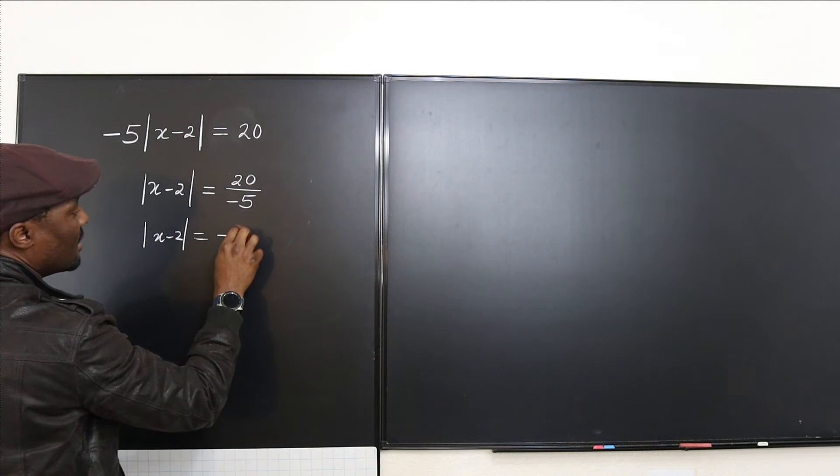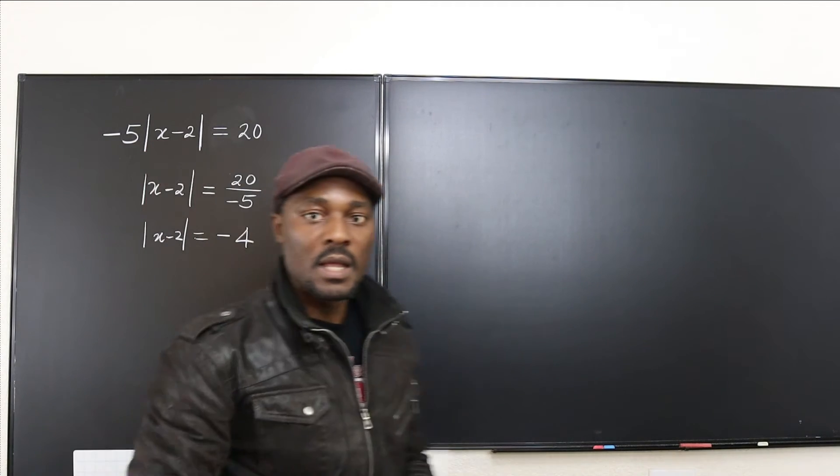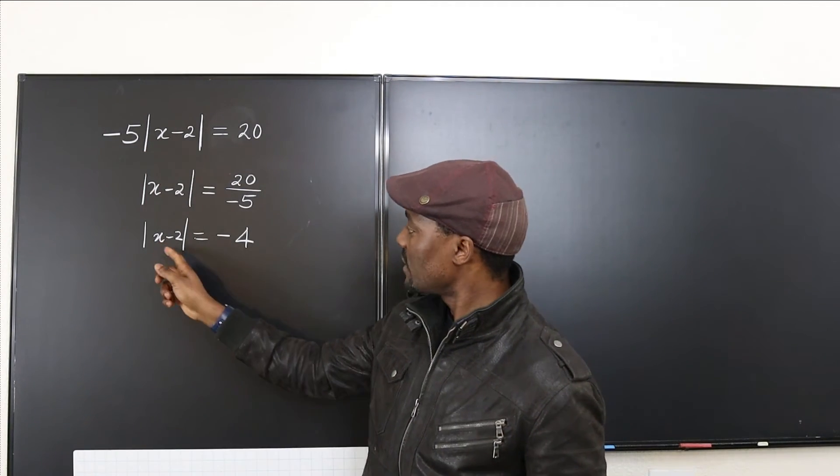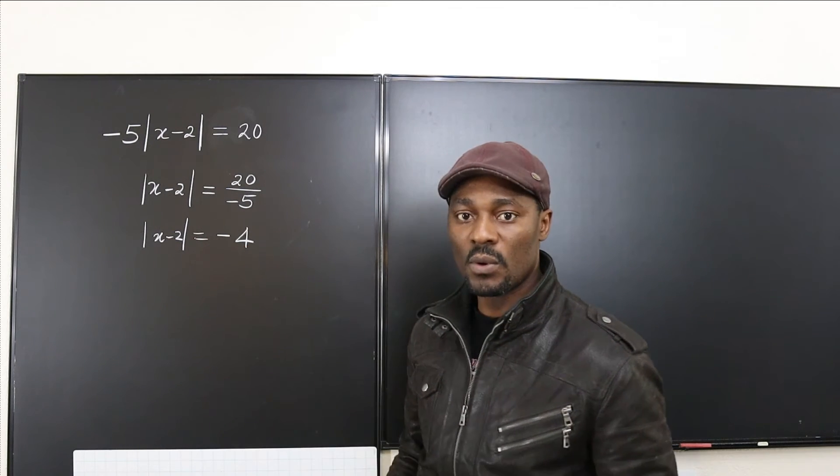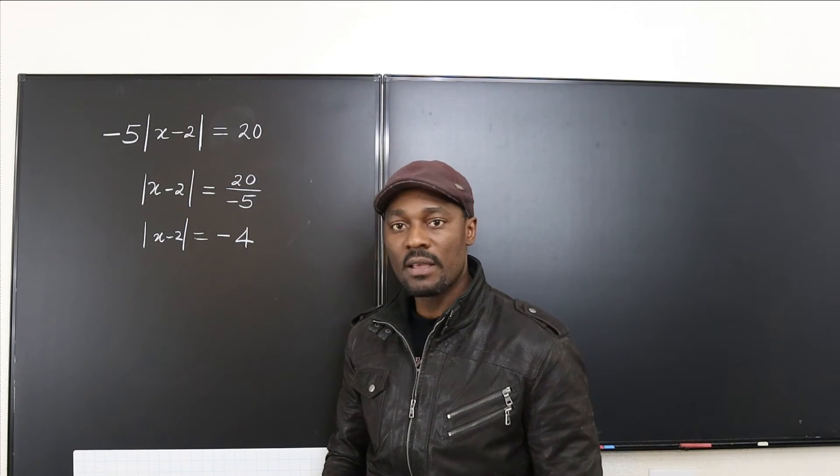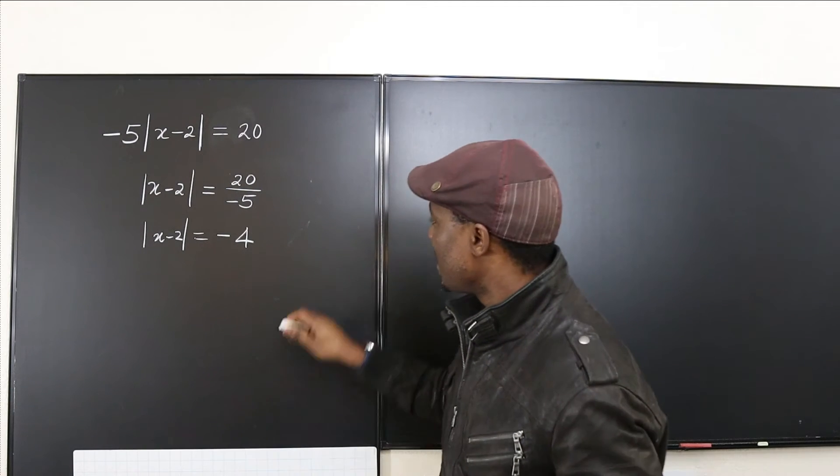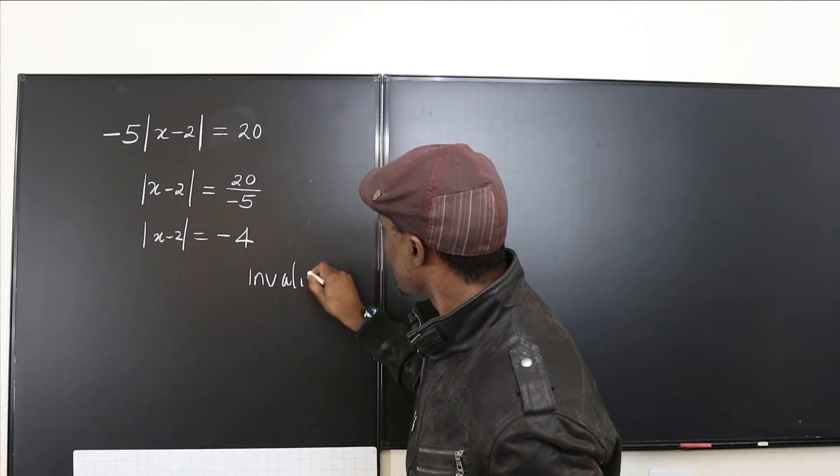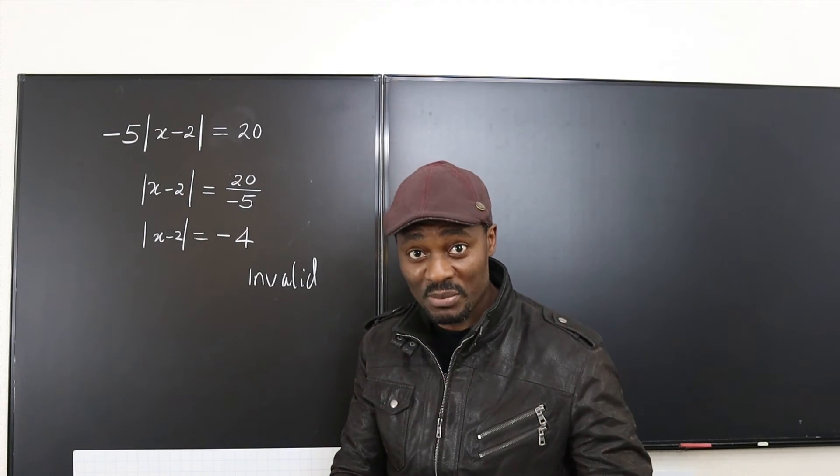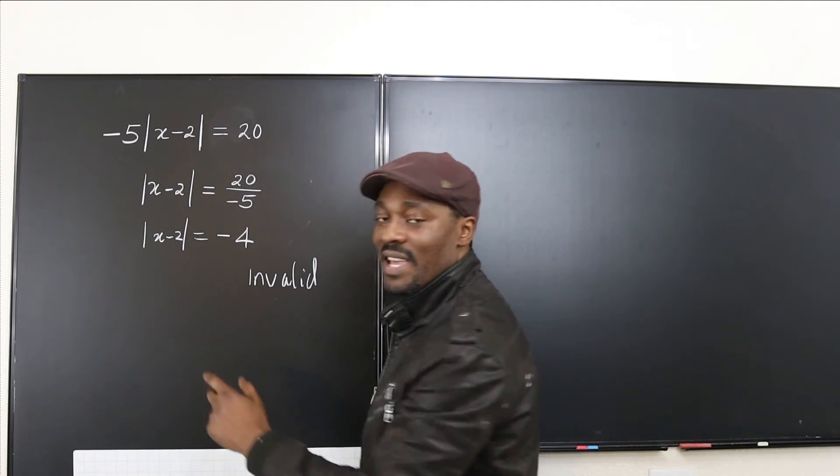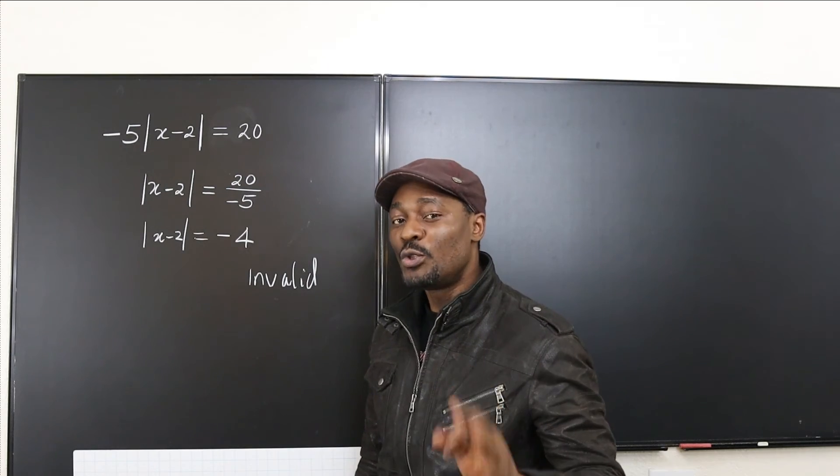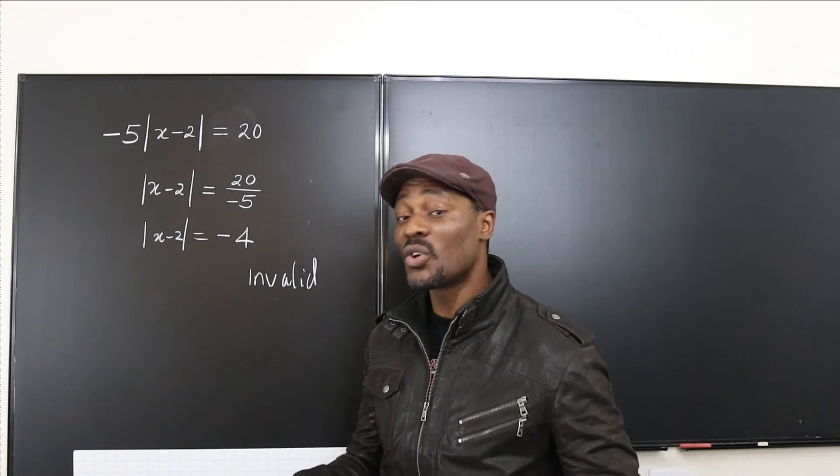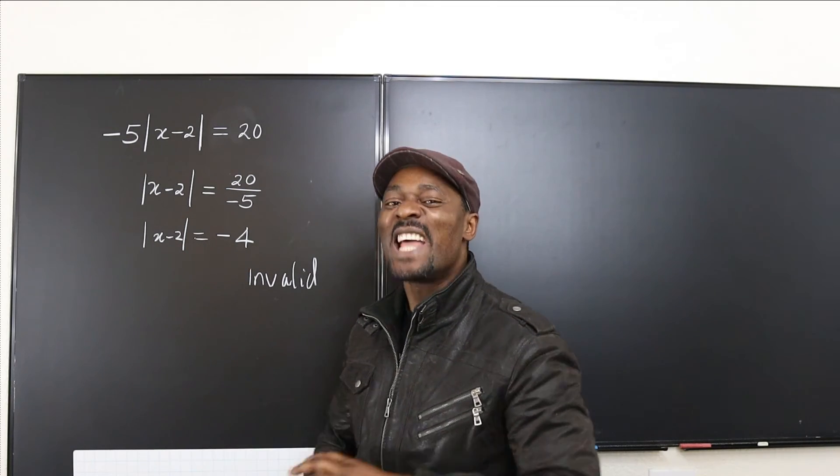This problem is invalid because it is impossible for the absolute value of anything to be negative. So do not go ahead to try to solve it. This cannot be solved, and this is the end of the video because when you take the absolute value of anything, your answer must be positive.